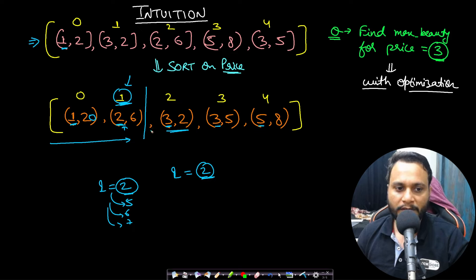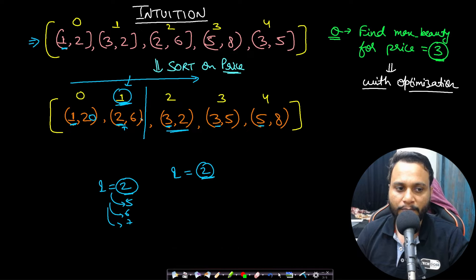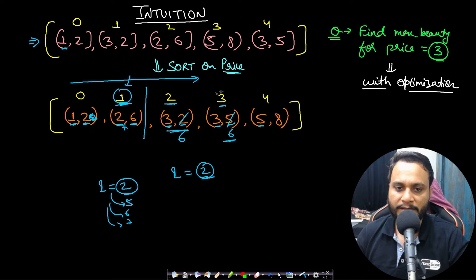What if we maintain the maximum beauty seen up to a certain index, like in the prefix sum technique? If we move from left to right and maintain the maximum beauty seen at each point: index 0 has beauty 2; index 1 takes max(2, 6) = 6; index 2 takes max(2, 6) = 6; index 3 takes max(5, 6) = 6. The meaning of 6 at index 3 is that 6 is the maximum beauty seen from the beginning up to this point. At index 4 with beauty 8, we take max(8, 6) = 8.